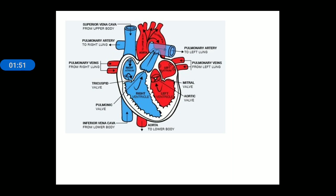This is the structure of heart, which is very important for your exam. You can see there are two shaded areas — the blue one and the red one. The blue area has deoxygenated blood, and the red area has oxygenated blood. When blood contains more oxygen it is known as oxygenated, and when it contains more carbon dioxide it is known as deoxygenated blood.